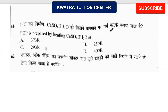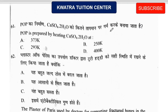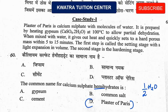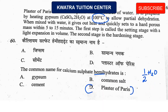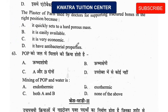Question number 61: POP is prepared by heating calcium sulphate·2H₂O at — options are 373 K, 250 K, 293 K, or 400 K. The passage mentioned 100 degrees Celsius. To convert to Kelvin, add 273. So 100 + 273 = 373 Kelvin, which is option A.